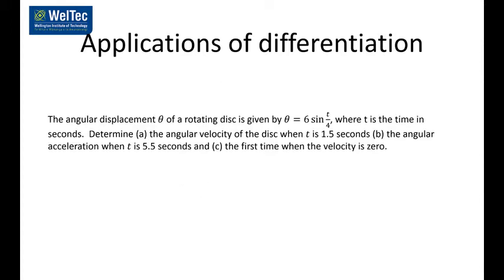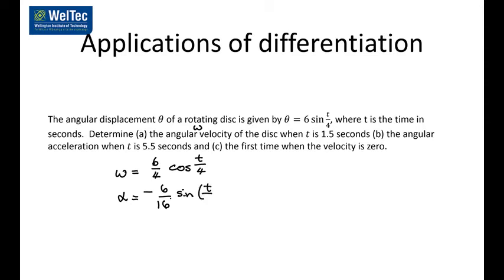All the questions are the same again. The distance is going around a circle, so to find the angular velocity omega, it's just the derivative. Finding the derivative gives 6 times a quarter, which is (6/4) cos(t/4). Then find the acceleration function by differentiating that again — the derivative of cos is negative, so it's a quarter times 6/4, giving negative 6/16. Then it's just a matter of putting in the numbers.